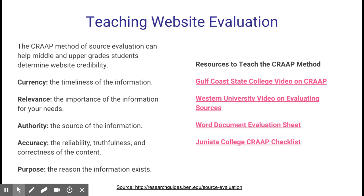Continuing with CRAAP: Authority — where is the source coming from? Accuracy — how reliable, truthful, and correct is the content when you do some double-checking on it? And Purpose — why was the website created? These criteria give students and educators a solid framework for evaluating any website they encounter.